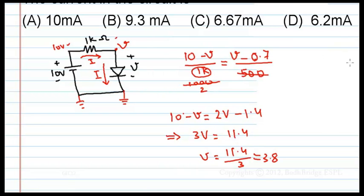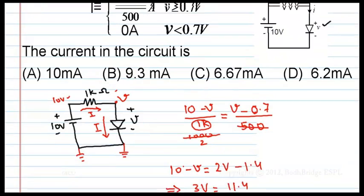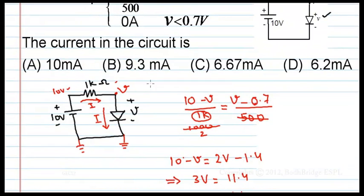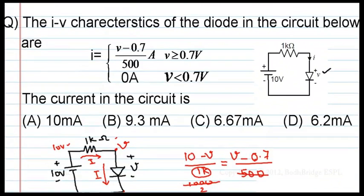Therefore, what we got? 3.8 V, which means this voltage is greater than 0.7. So, this much amount of current exists.